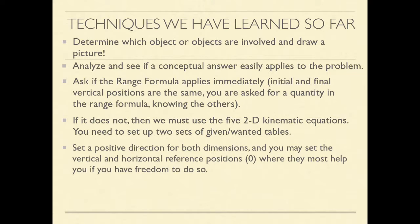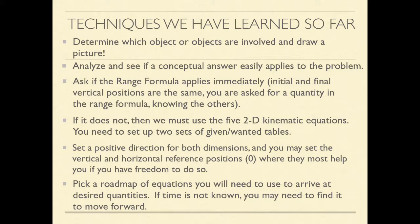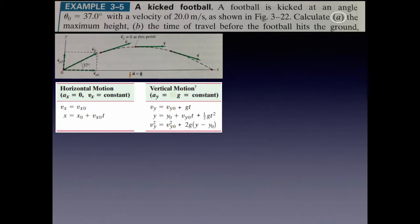While setting up your tables, set a positive and negative direction for both components. Also set a reference position — where is zero for horizontal movement and where is zero for vertical movement — wherever it helps you most. Then pick a roadmap: figure out which equation you need to solve for the exact quantity asked for in this part of the problem. You may have to do some investigative work or use more than one equation to reach your desired result.